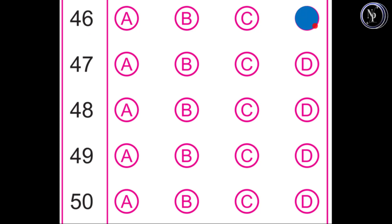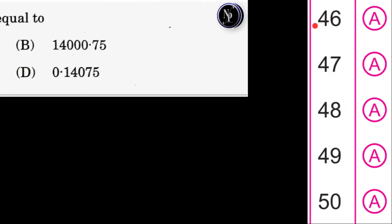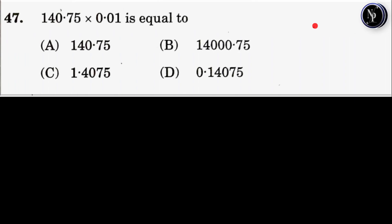Now let us move to the next question. Question number 47: 140.75 into 0.01 is equal to? We have to find the product of these two decimal numbers.